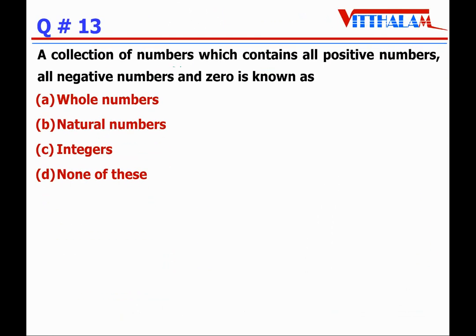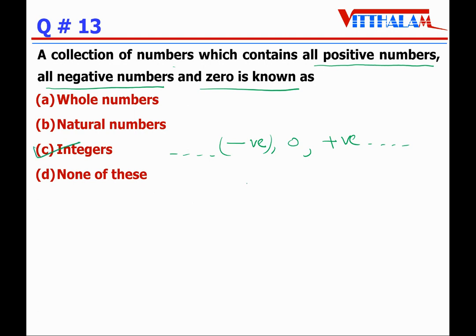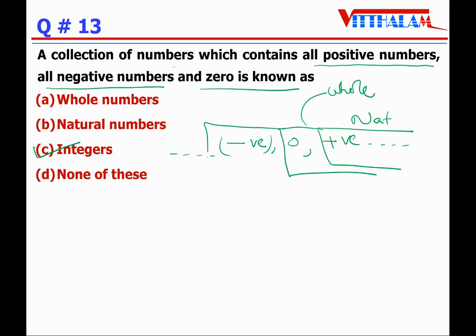Question 13: A collection of numbers which contains all positive numbers, all negative numbers, and zero is known as? Positive numbers are natural numbers. Natural numbers plus zero are whole numbers. Adding negative numbers to that gives us integers. So the answer is integers.